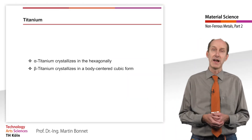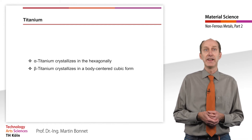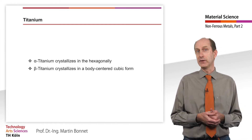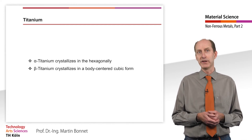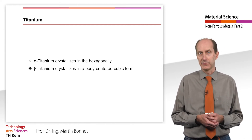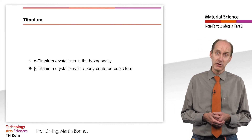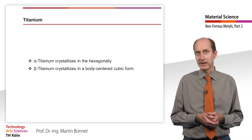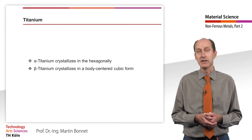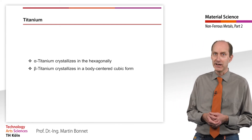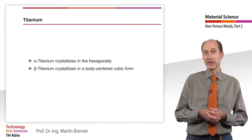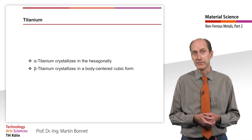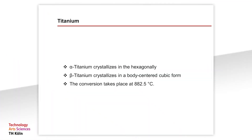Titanium, like iron, exists as a polymorphic metal in two allotropic modifications. Alpha-titanium crystallizes in the hexagonally closest packing. Beta-titanium crystallizes in a body-centered cubic form. The conversion between the two forms takes place at 882.5 degrees Celsius.